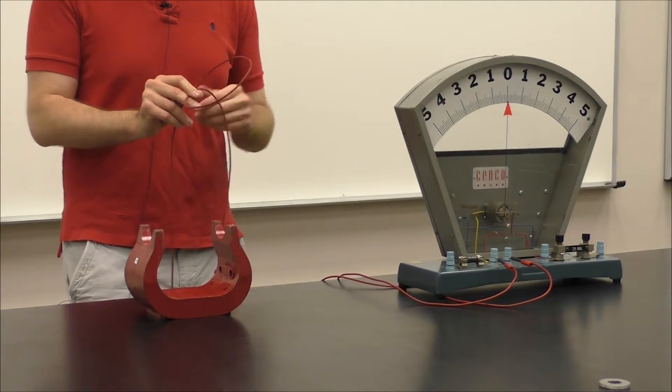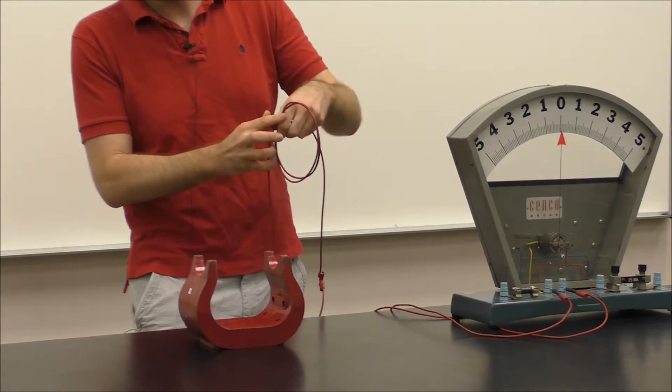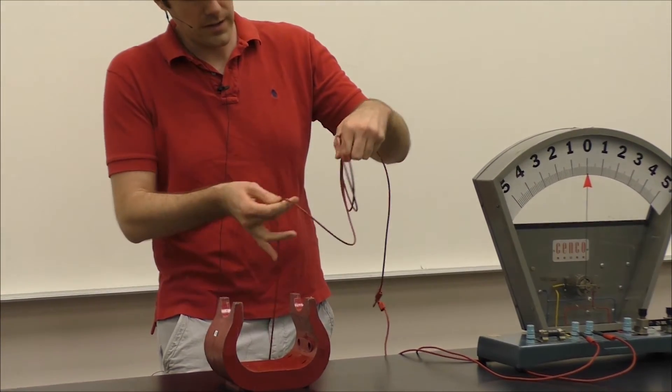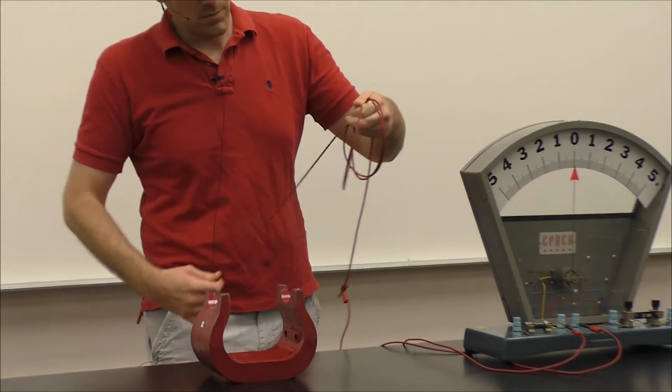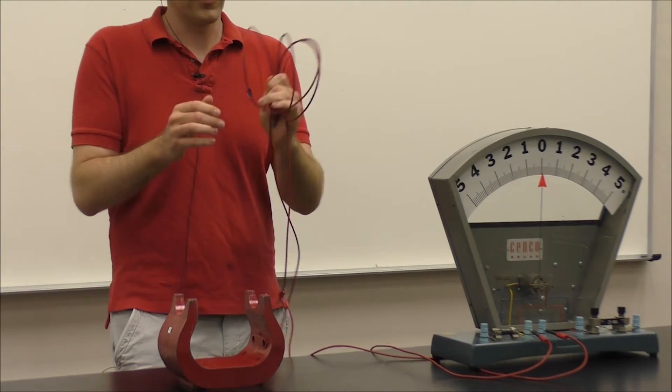Now in addition to changing the area, I can increase the number of coils. Instead of one coil, I can wrap this up four times, so now I have four coils.